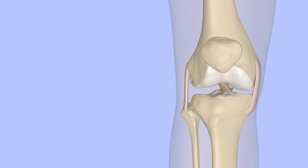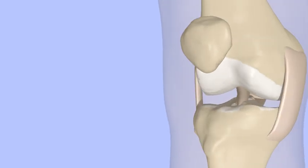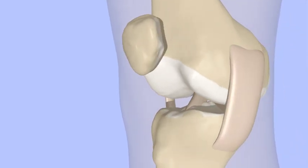The anterior cruciate ligament, or ACL, attaches from the notch of the femur to the front of the tibial plateau. It keeps the tibia from gliding too far forward in relation to the femur.